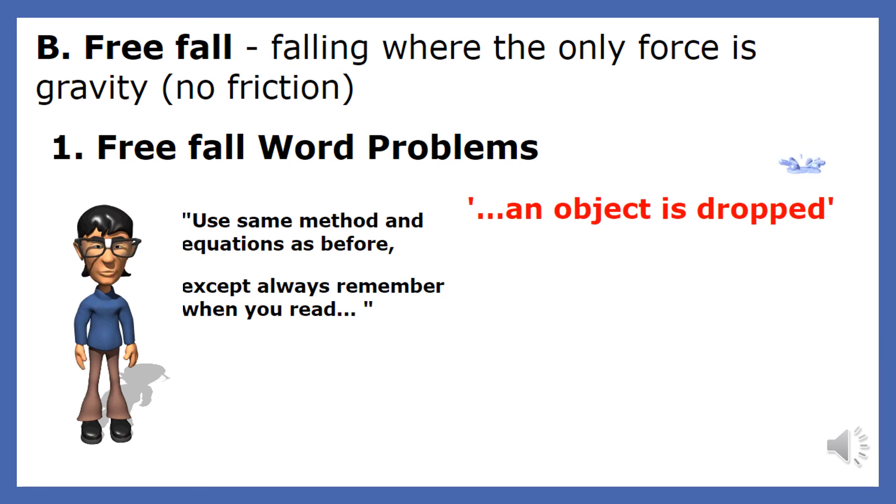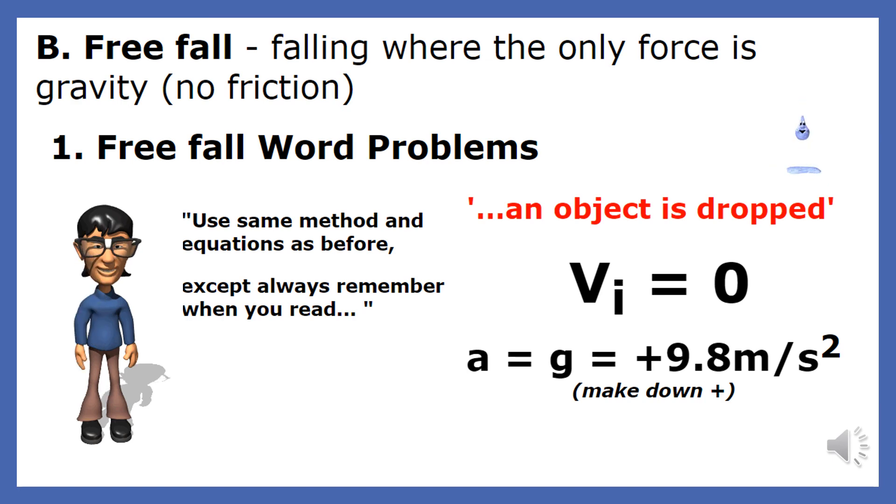When an object is dropped, we make the direction down positive, so the acceleration due to gravity is positive 9.8 meters per second squared. Furthermore, when an object is dropped, the initial velocity is 0 meters per second.